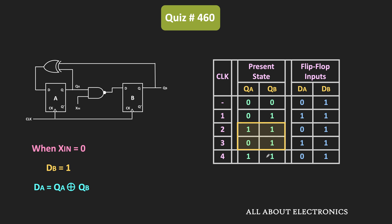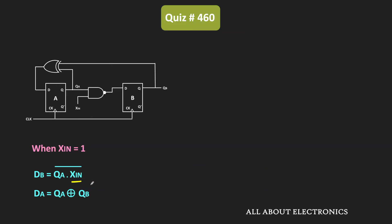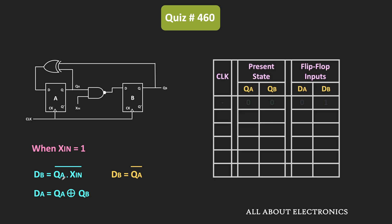Now let us see what happens when the input xin is equal to 1. From the equation, when xin equals 1, then dB becomes Qa bar, and dA remains Qa XOR Qb. The FSM starts at the 0,0 state. Since Qa equals 0, Qa bar becomes 1, so the dB input is equal to 1. And since 0 XOR 0 equals 0, the dA input becomes 0. So initially, dA is equal to 0 while dB is equal to 1.